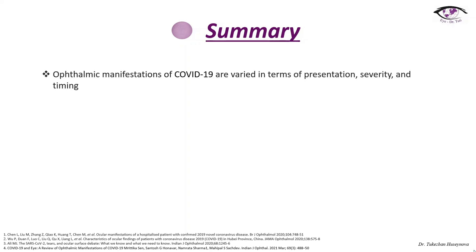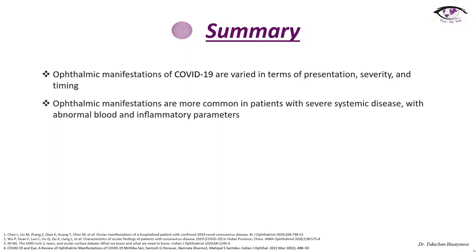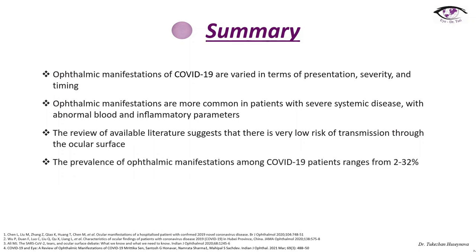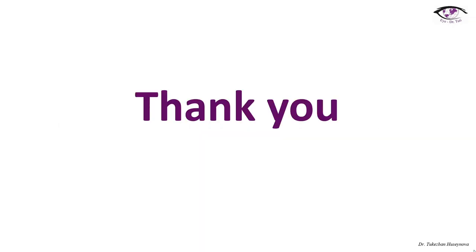As a summary of the whole presentation: ophthalmic manifestations of COVID-19 show variety in terms of presentation, severity, and timing. Ophthalmic manifestations are more common in patients with severe systemic disease with abnormal blood and inflammatory parameters. The review of available literature suggests there is very low risk of transmission through the ocular surface. The prevalence of ophthalmic manifestations among COVID-19 patients ranges from 2 to 32%. Thank you for watching — stay positive but COVID negative. Till the next video.